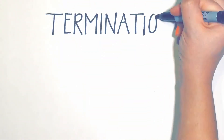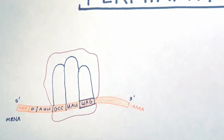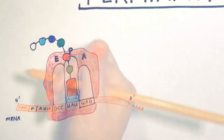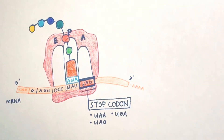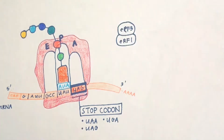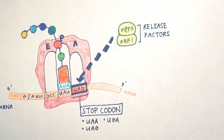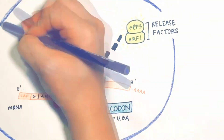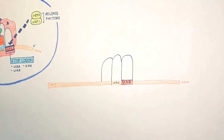The last stage of translation in eukaryotic cells is termination. Termination occurs when the stop codon is reached in the mRNA. There are three stop codons: UAA, UAG, and UGA. No tRNA can fit in the A-site at this point because there is no tRNA that matches the complementary sequence. Instead, they are recognized by proteins called release factors. In eukaryotes, a single release factor, eRF1, recognizes all three stop codons.